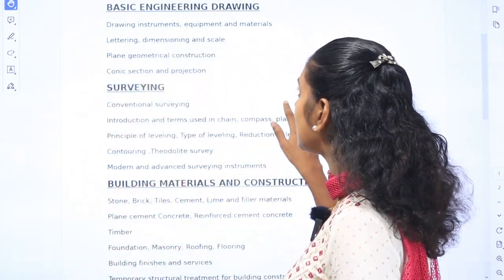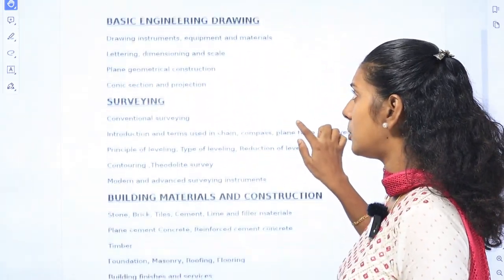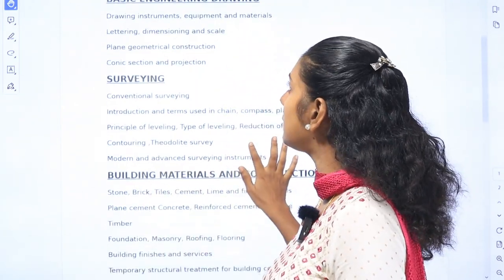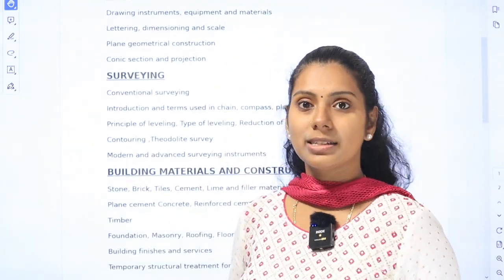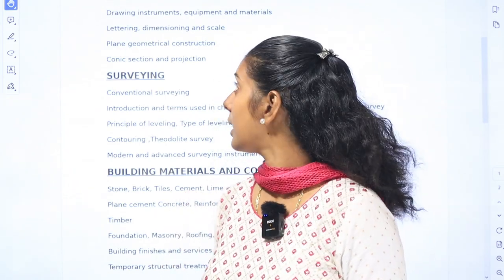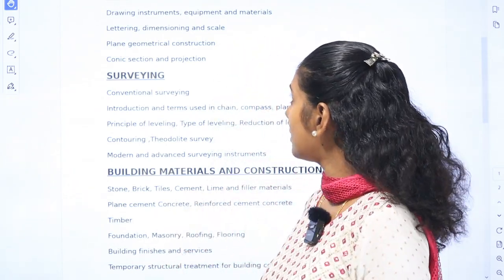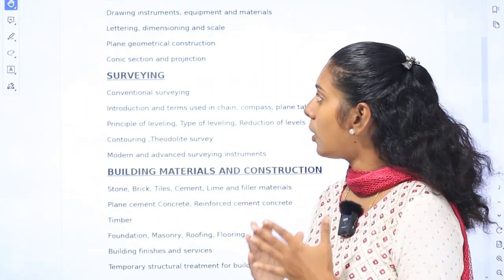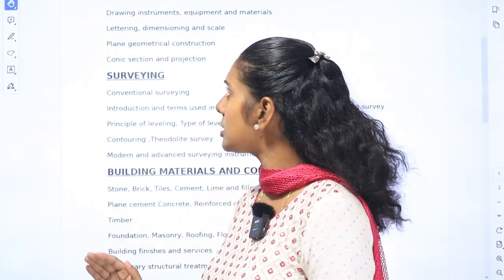In all civil engineering studies, there are 6 modules in common. In those 6 modules, the first is basic engineering drawing. Topics include: drawing instruments, equipment, materials, lettering, dimensioning, conic section, projection — all the topics. That's why we cover all these topics in our graphics paper.